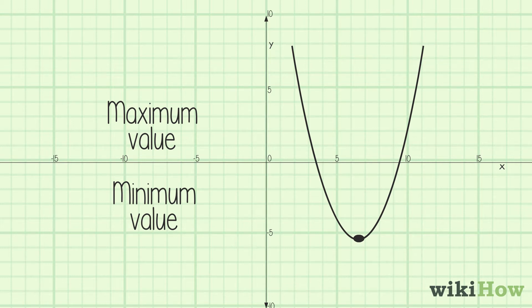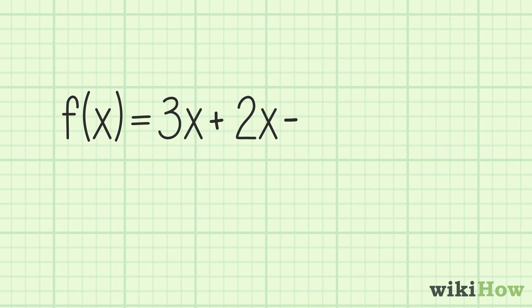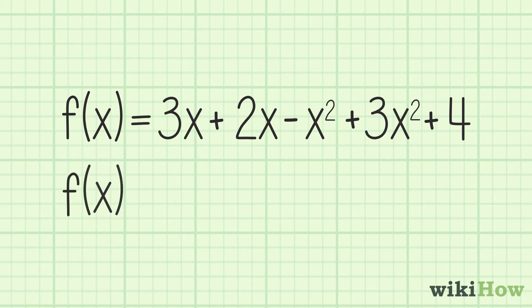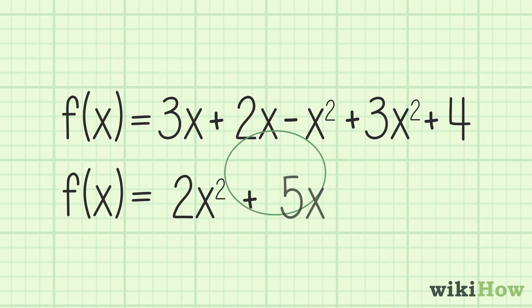For example, if you're starting with the function f(x) equals 3x plus 2x minus x squared plus 3x squared plus 4, you would combine the x squared and the x terms to simplify and end up with f(x) equals 2x squared plus 5x plus 4.